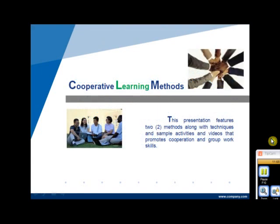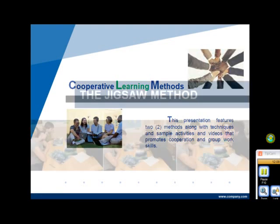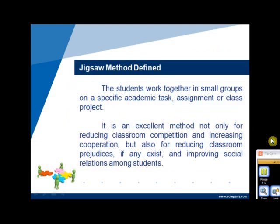Featured in this video presentation are two methods that foster cooperation and group work skills among students: the Jigsaw method and the problem-solving method. The Jigsaw method is where students work together in small groups on specific academic tasks, assigned work, or class projects. It is an excellent method not only for reducing classroom competition and increasing cooperation, but also for reducing classroom prejudices, if any exist, and improving social relations among students.